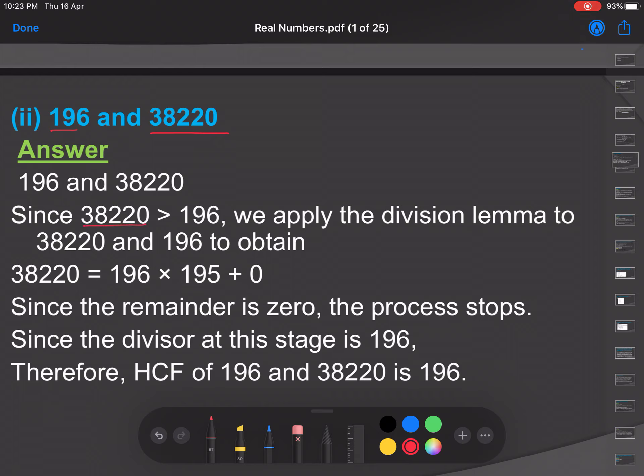Since 38220 is greater than 196, we apply the division lemma to both numbers. We divide 38220 by 196, we get 195 quotient and remainder 0.